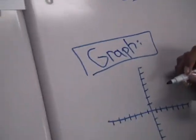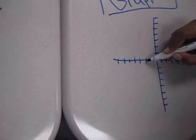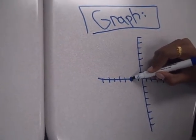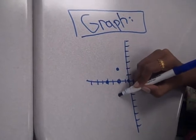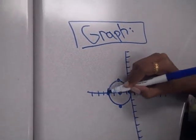And then you graph it. So you put the center at (-2, 0), and then just go 2 away from every point and make a circle. See ya.